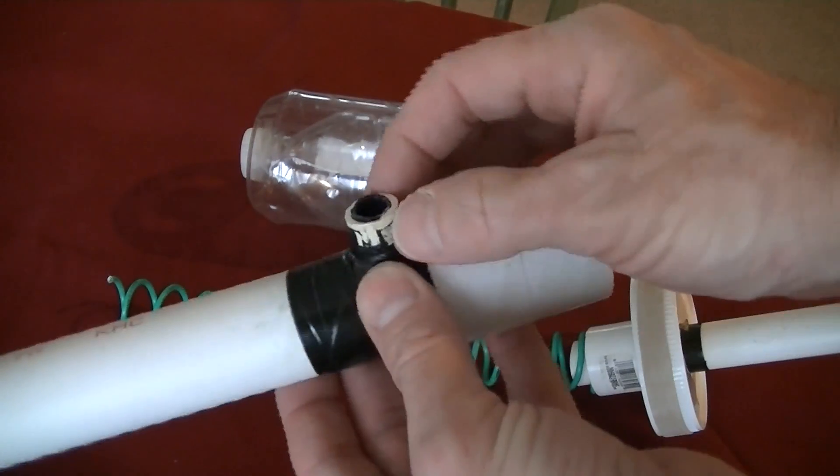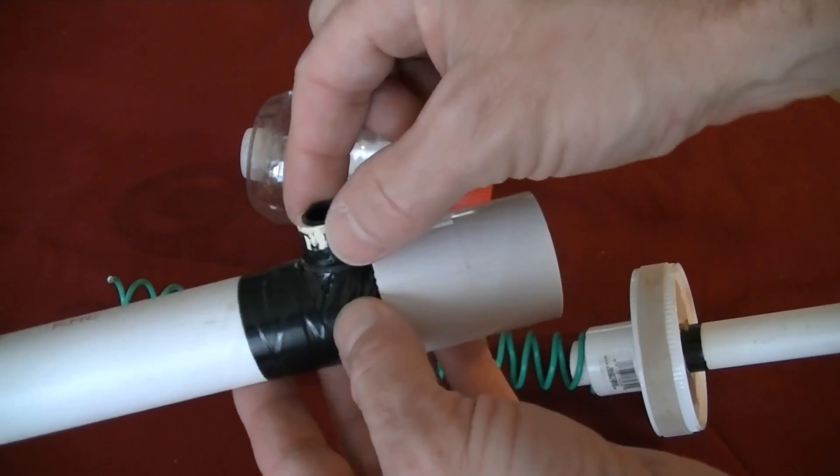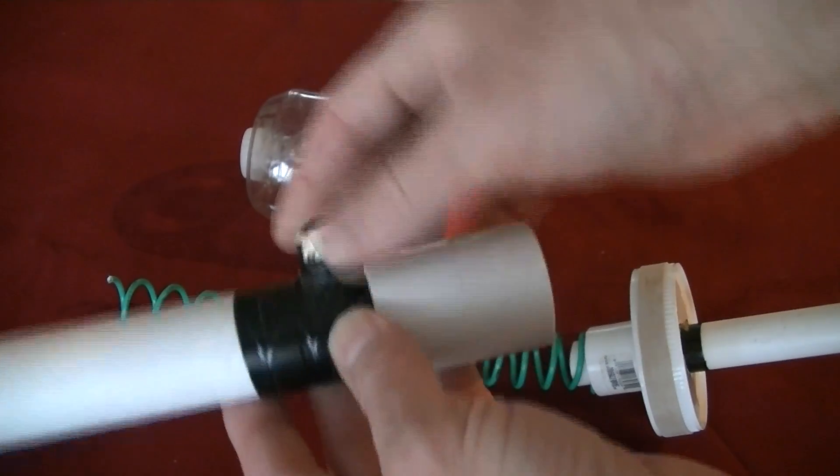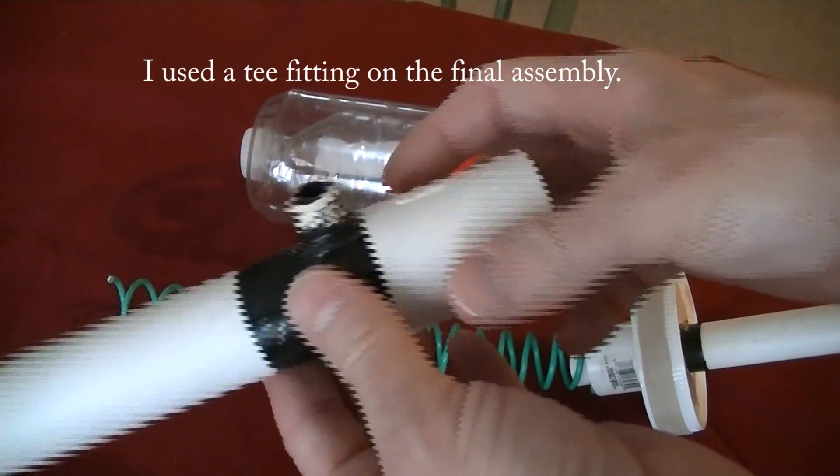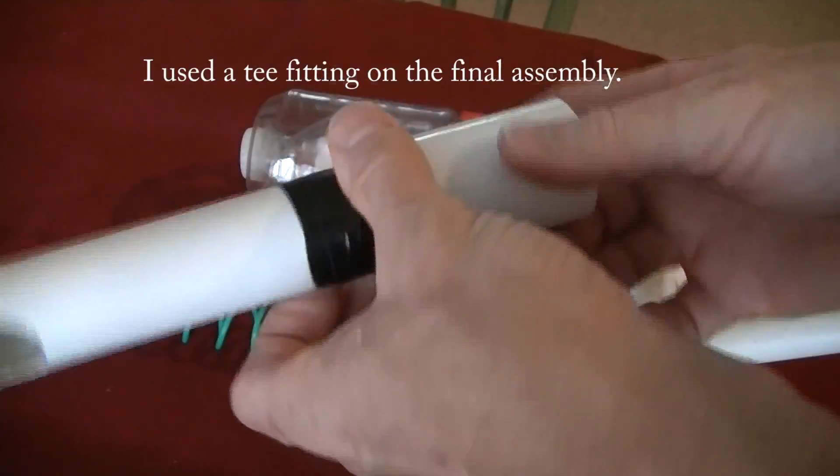I glued it in there, but it didn't glue real well because it's just a hole in the pipe. So I just taped it in real good with some electrical tape. That's it. It's pretty easy. And there's my coil.